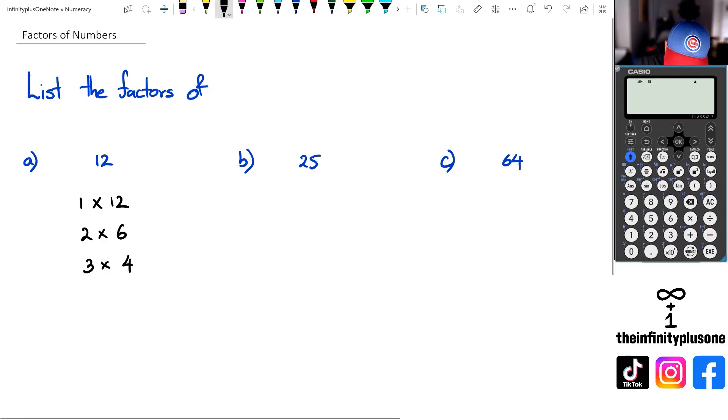So we've got this at the moment, so that basically means that we can say that factors of 12 are 1, 2, 3, and then we've got 4, 6, and 12 itself. So factors of 12 has got 6 factors, which is 1, 2, 3, 4, 6, and 12.